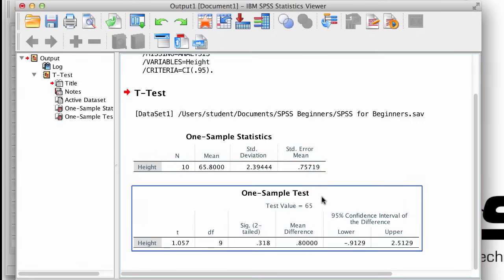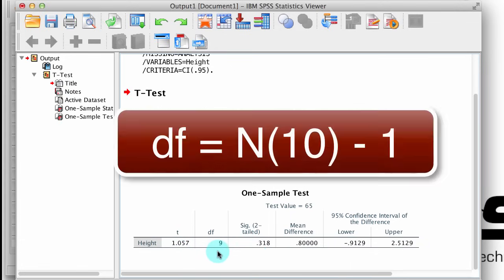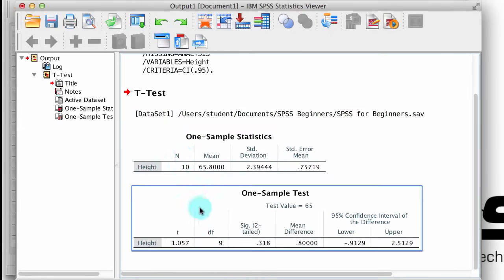The second table contains our inferential statistics, and this is where we find out if the mean of our sample is significantly different from 65 or not. We have the t-score right here, the degrees of freedom which is n minus 1, and finally the p-value that corresponds to this t-score at this degrees of freedom in the box labeled sig two-tailed.